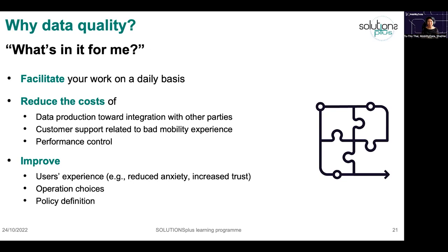High data quality reduces the cost of customer support. For example, if the bus line is encoded in the right color or the bus stop has the right name in the data, the user is less confused when taking the right bus. It also reduces the cost of performance control, because you can compare apples to apples. Data quality overall improves user experience — it reduces anxiety when taking public transit, increases trust, and improves operational decision-making based on things that can be verified and double-checked.